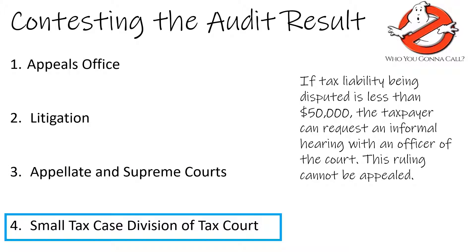An alternative to litigation is a small tax case division of the tax court. If the tax liability being disputed is relatively small — less than $50,000 — the taxpayer can request an informal hearing with an officer of the court. The taxpayer pays a $60 administrative fee, which is lower than the legal fees would likely be in the case of a tax court. But the ruling cannot be appealed once it's determined — it's final. In any case, the IRS is liable for the court costs if the IRS loses.